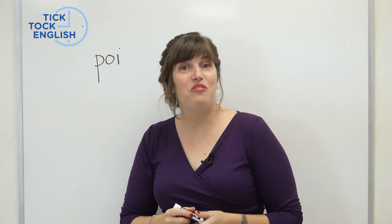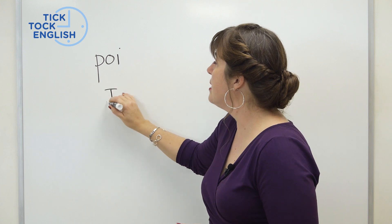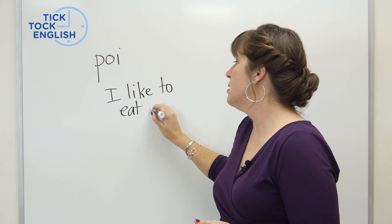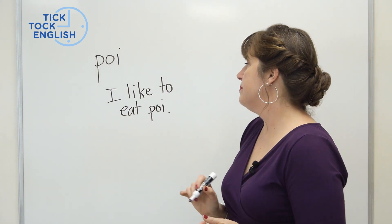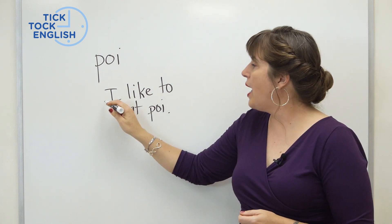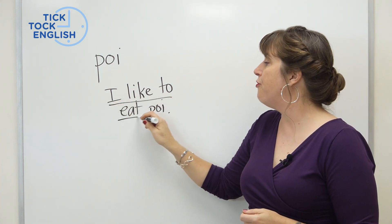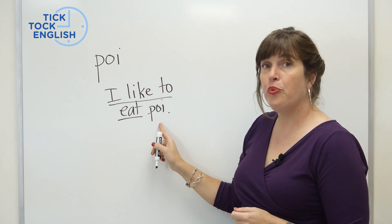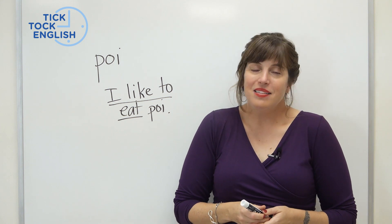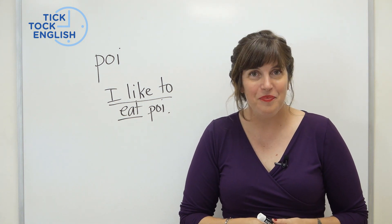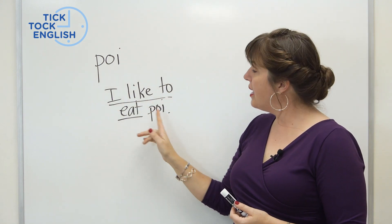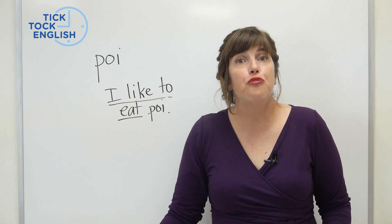It's just one word. But let me give you some context. How about if I write this: I like to eat poi. Now we have some context — we have some words before our word that we don't know. Now, what is poi? Must be food, right? I look at the words before poi and I think, oh, poi is a food.